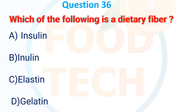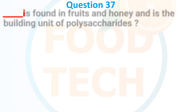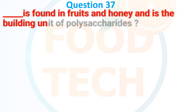Question 36: Which of the following is a dietary fiber? A. Insulin, B. Inulin, C. Elastin, D. Gelatin. The answer is B. Inulin.